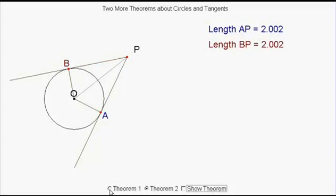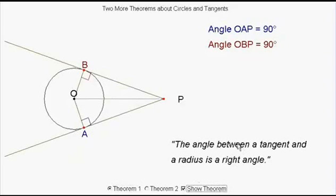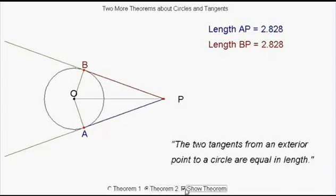Let's just run through the two rules again. First of all, the angle between a tangent and a radius is always a right angle. And the second one, the two tangents from an exterior point to a circle are equal in length.